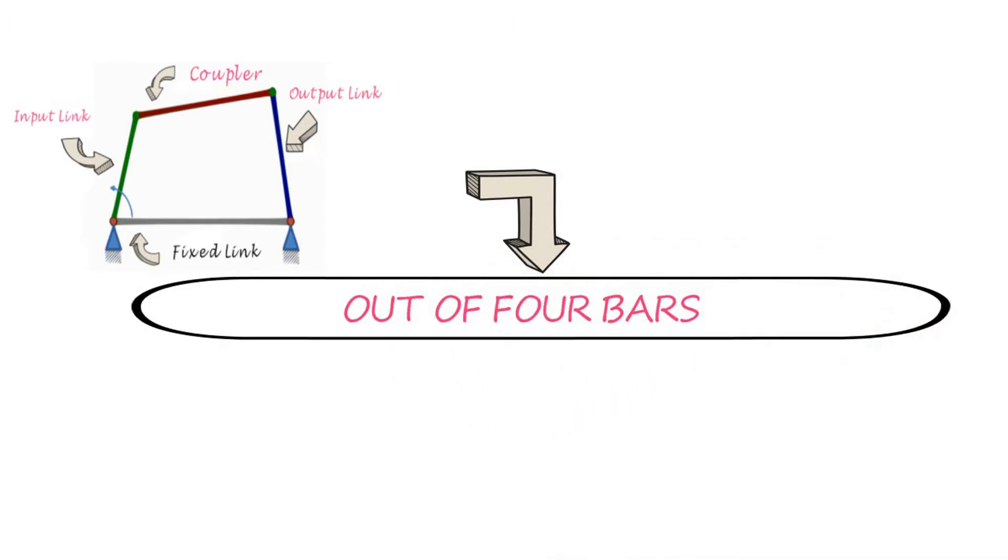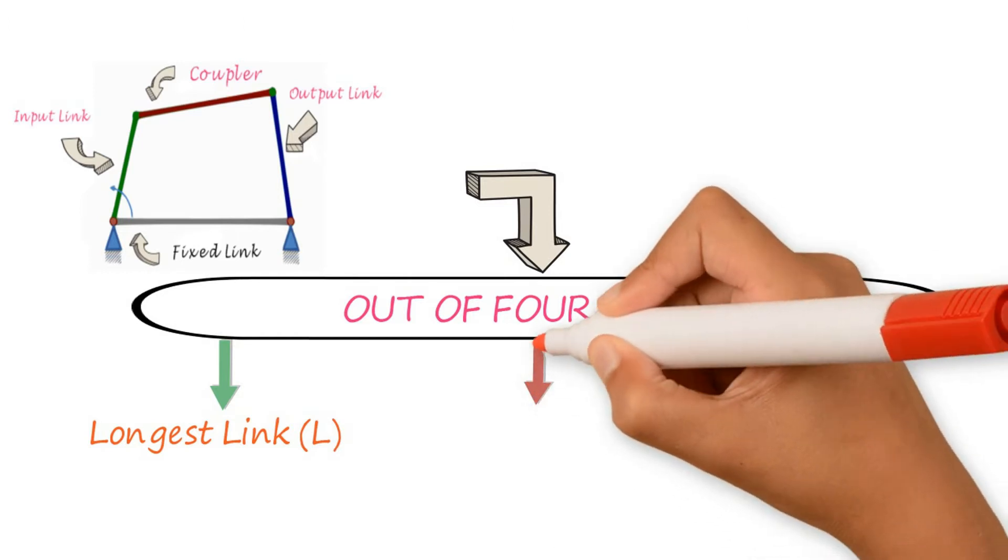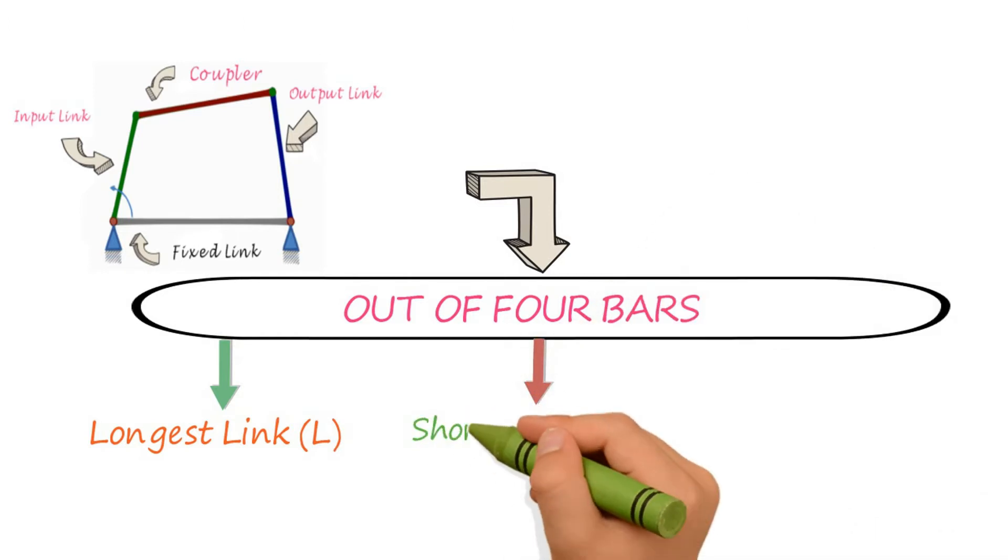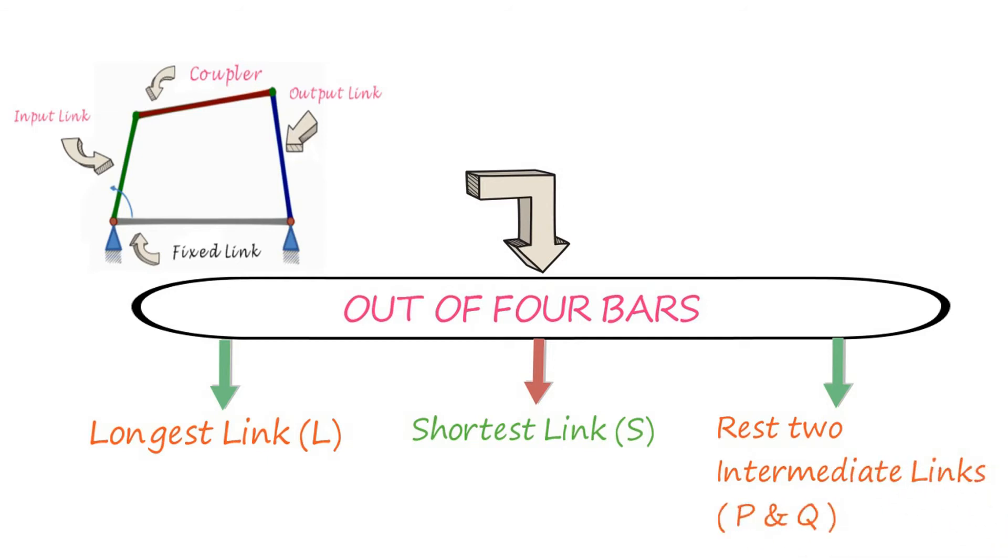Out of four bars from a mechanism, one is longest link, let its length be L. One is shortest link, let its length be S. Rest two are intermediate links, let their lengths are P and Q.